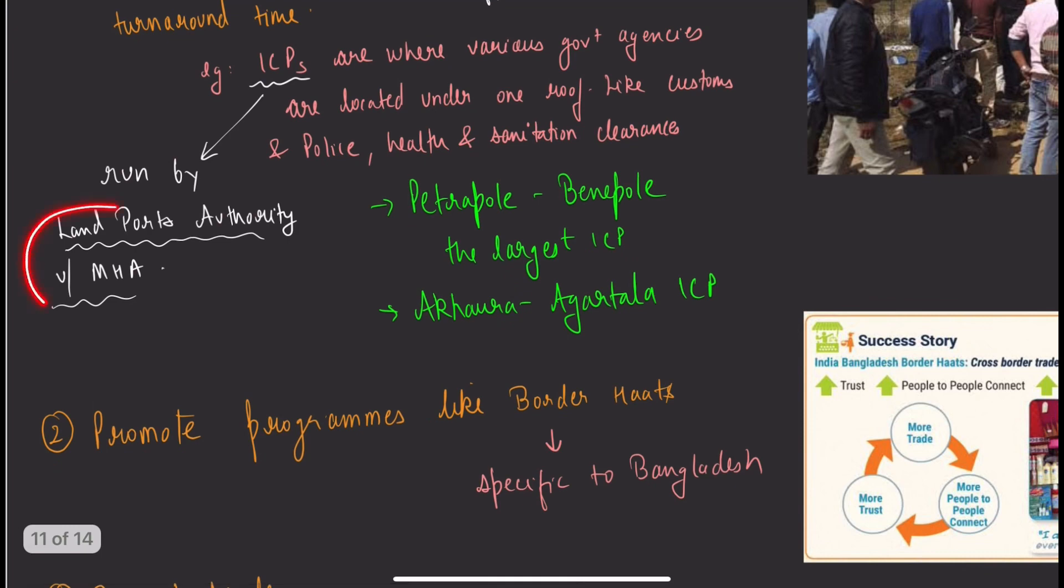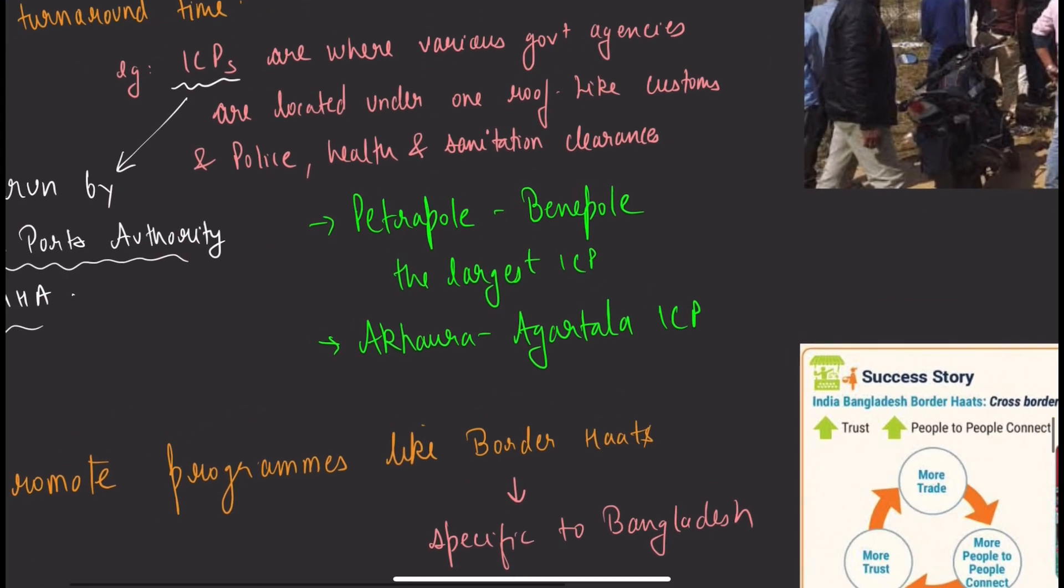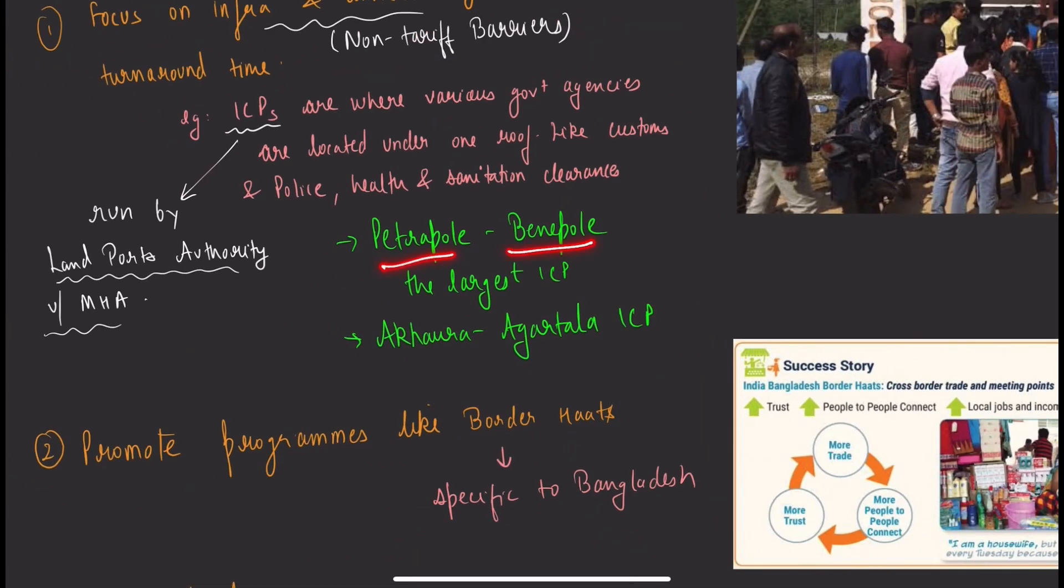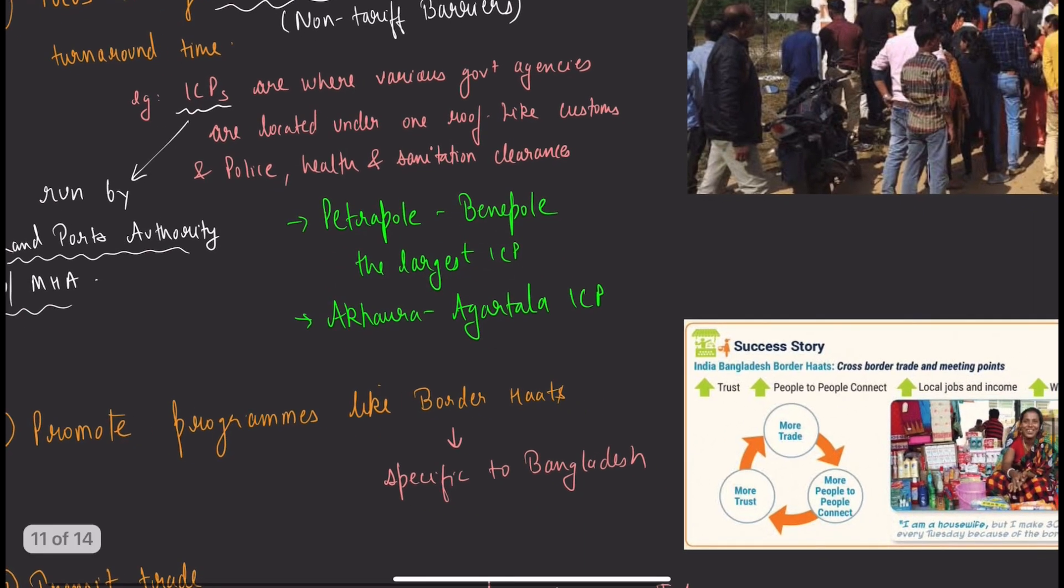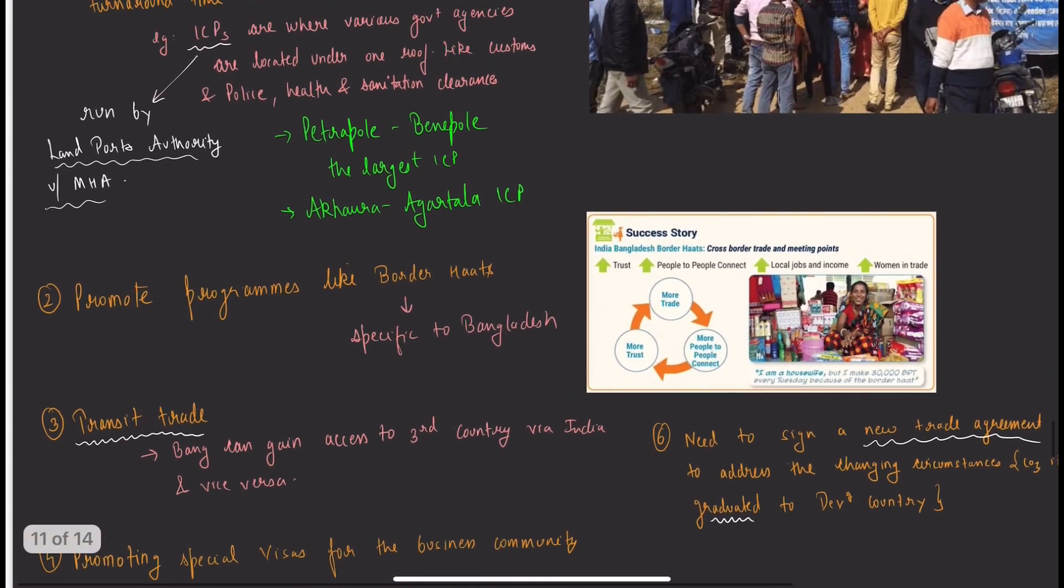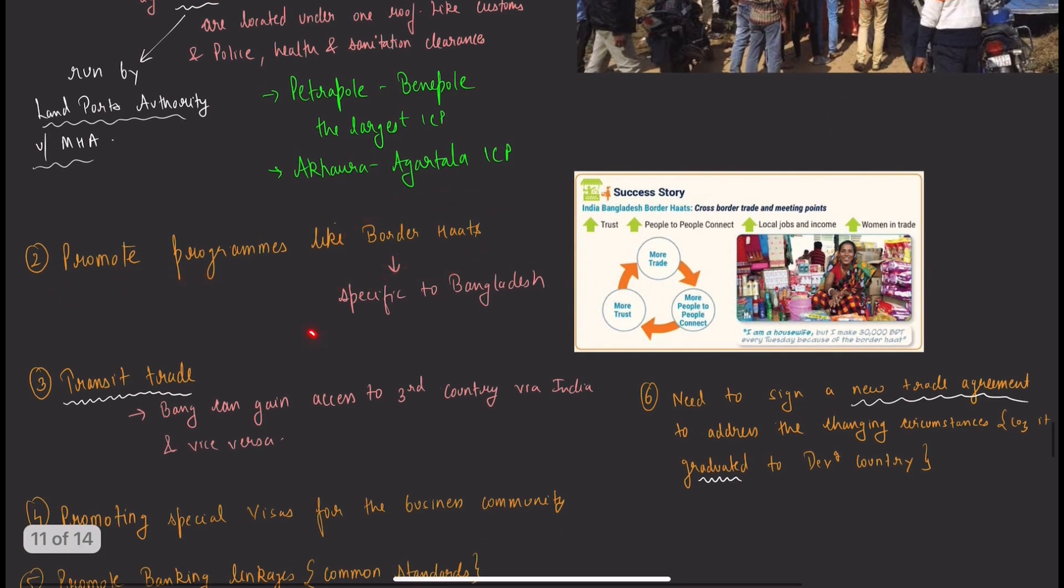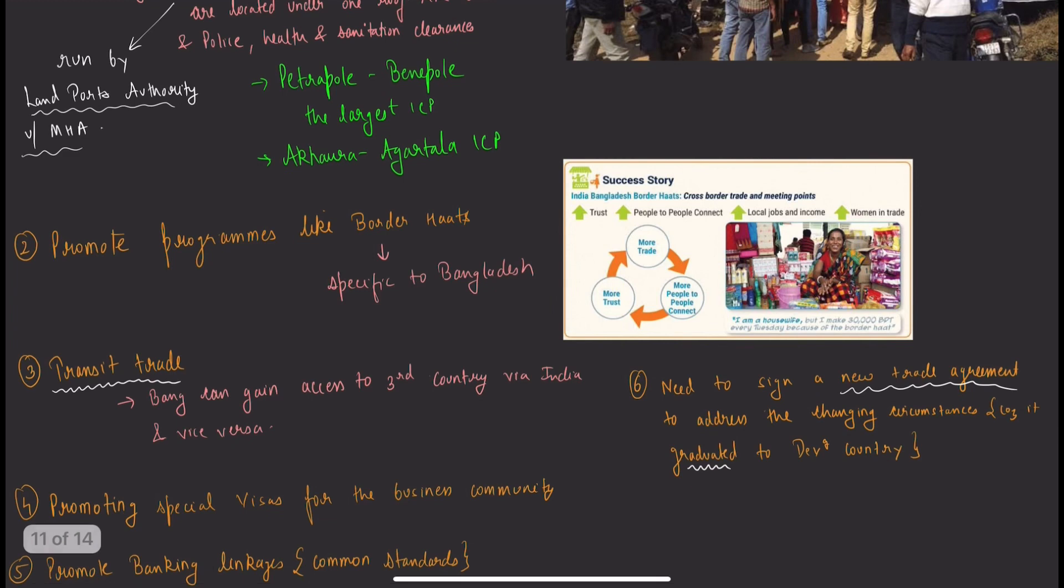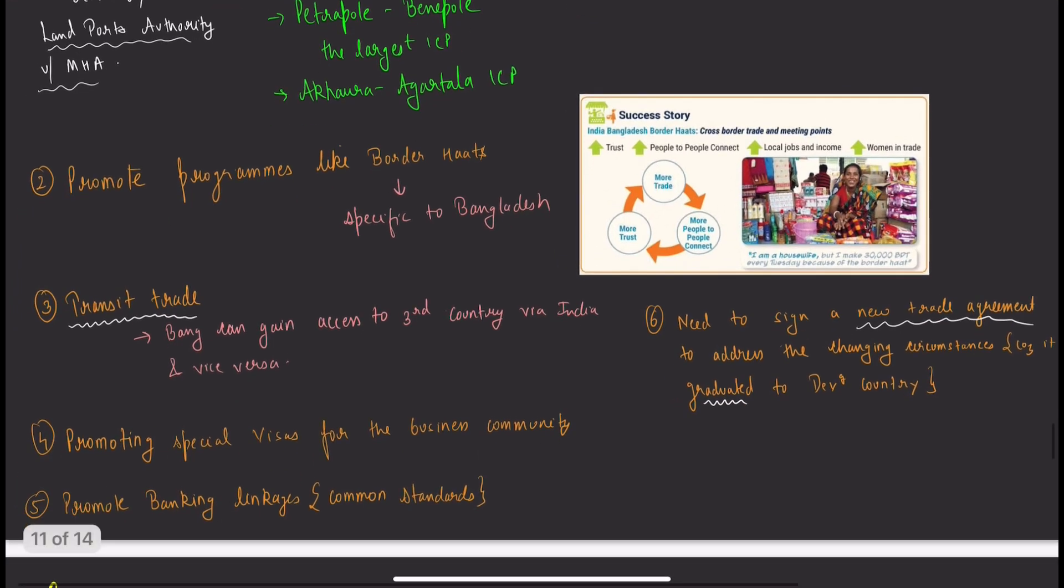ICPs are run by the Land Ports Authority under Ministry of Home Affairs. Petrapole-Benapole is the largest integrated checkpoint between India and Bangladesh. Another example is Akhaura and Agartala integrated checkpoint. We can promote programs like border haats, which are specific to Bangladesh because we have better relations.